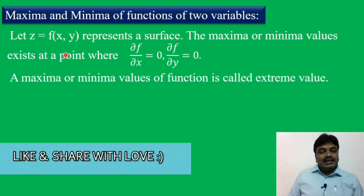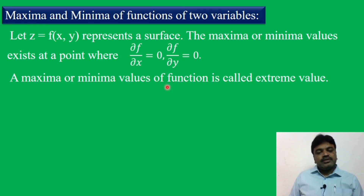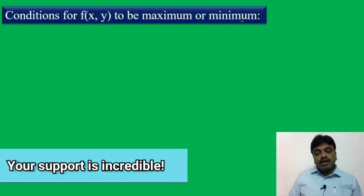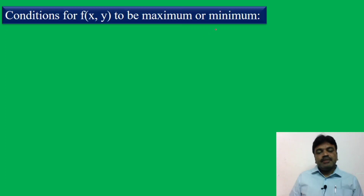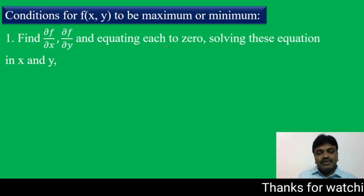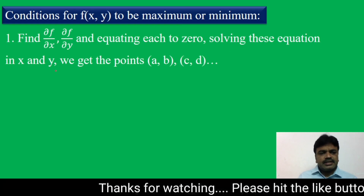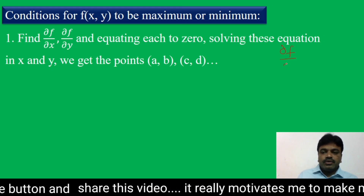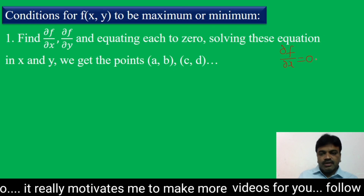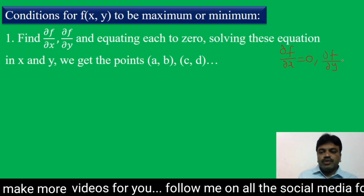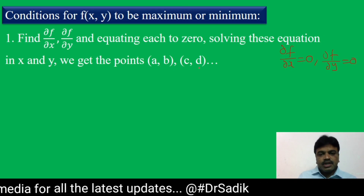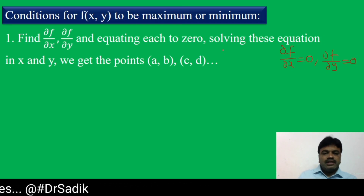Now, how to find maxima and minima values of the function? We have certain conditions. First condition: find ∂f/∂x and ∂f/∂y and equate each to 0. Solving these equations in x and y, we get the points (a,b), (c,d) and so on. These points are called stationary points.